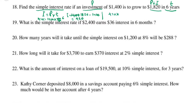420 equals 1,400 times r over 100 times 6. Move terms to solve: 6 times 100 is 0.6. Divide both sides by 6, then multiply both sides by 100, then divide both sides by 1,400. Use a calculator: 420 times 100 divided by 1,400 divided by 6 equals 5.